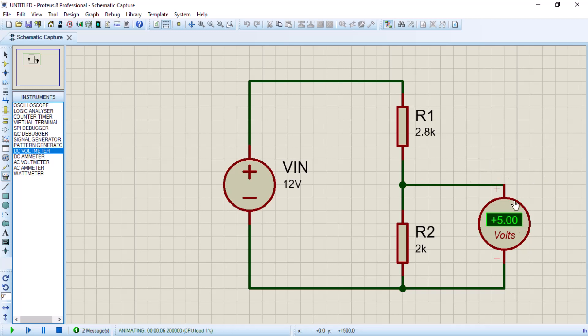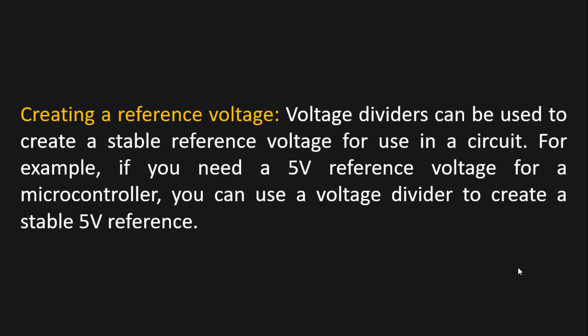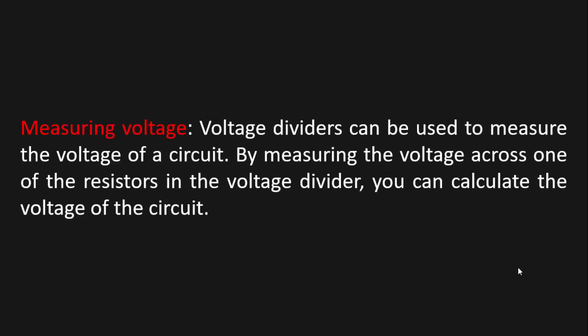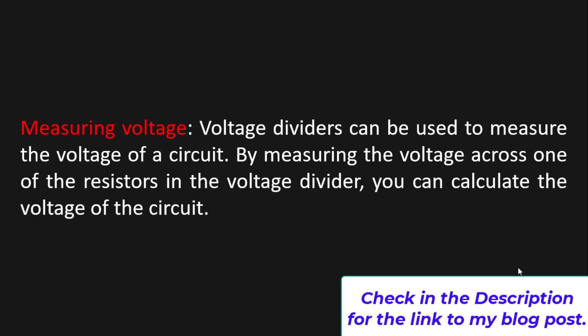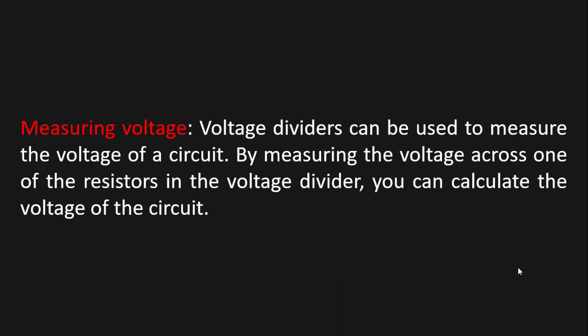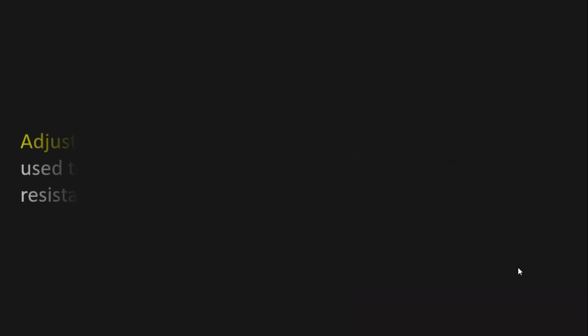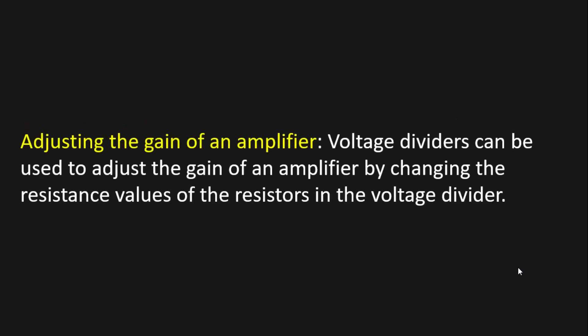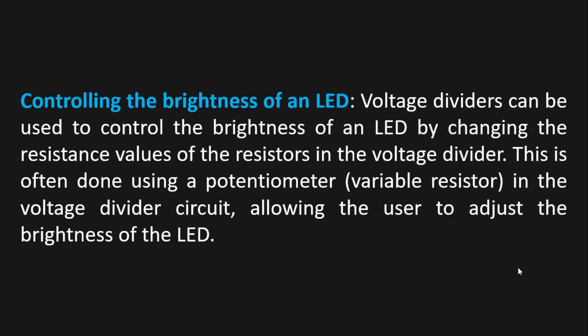Another application is to create a reference voltage. Another is measuring a voltage — a voltage divider can be used to measure the voltage of a circuit by using the voltage across the resistors and calculating from there. It can also be used for adjusting the gain of an amplifier by changing the resistance values in the voltage divider, and it can be used to control the brightness of an LED.